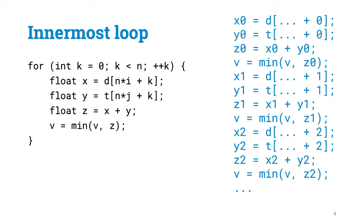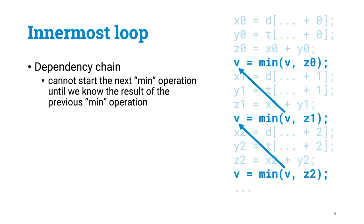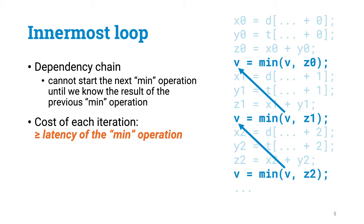If you look at these operations, many are actually independent of each other. For instance, reading X and reading Y could in principle be performed simultaneously in parallel. All of these additions are also independent of each other — the result of one addition is not needed as an operand for another. However, if you look at the minimum operations, every single minimum operation depends on the result of the previous minimum operation. You can't even start to calculate the minimum of V and Z if you don't know the value of V.